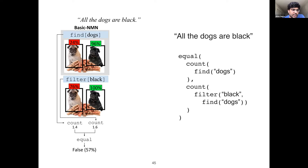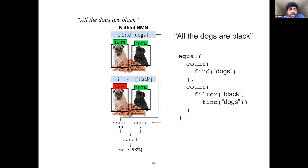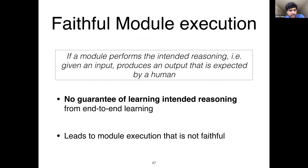What we observe is that modules don't actually perform as intended. For instance, find might only output the black dog, missing the white one, and filter then only selects that black dog because that's all it received. Even with these unfaithful intermediate outputs, the final answer might be 'false' with 57% probability — technically correct but untrustworthy. There is no guarantee that end-to-end training causes modules to learn their intended reasoning.